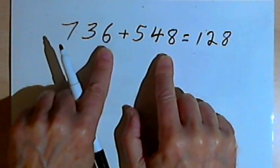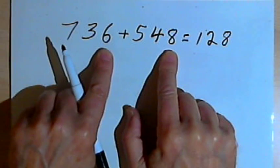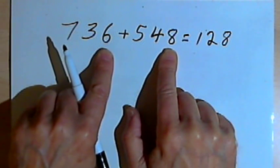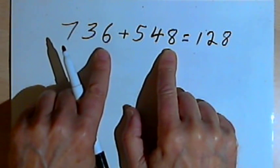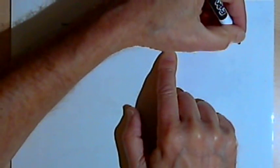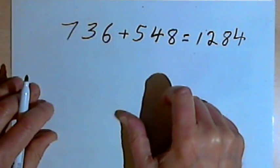And then I'll go to my ones, where I have a 6 and an 8, and I can add those together and get a 14. Now I already did the carrying part of that 14, so all I have to do is write a 4.